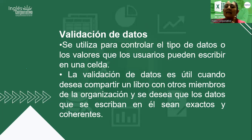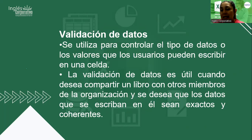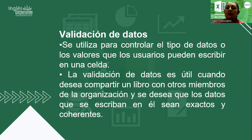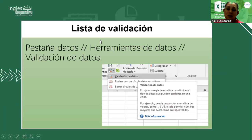La validación se utiliza para controlar los tipos de datos o valores que los usuarios podemos escribir dentro de una celda. De eso se trata la validación: restringir. Yo puedo especificar cierta información que solamente esa se pueda escribir en un rango de celdas o en una celda determinada. La validación de datos es útil cuando nosotros compartimos un libro con otros colaboradores y deseamos que los datos sean exactos y coherentes. Ahí es donde aplicamos la herramienta de validación.